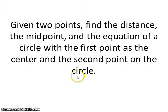We're going to consider a line segment between the two points, and we're going to find the distance of that line segment, the midpoint of that line segment, and then we're going to find the equation of a circle using the first point as the center of the circle and the second point as a point on the actual circle.